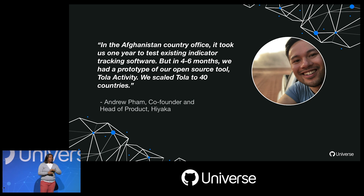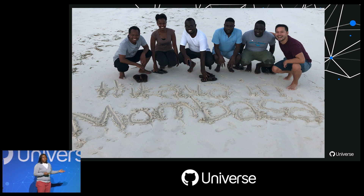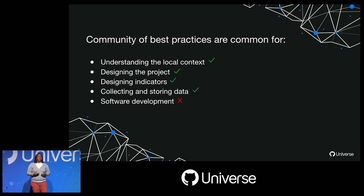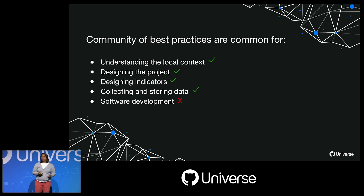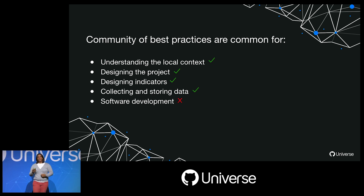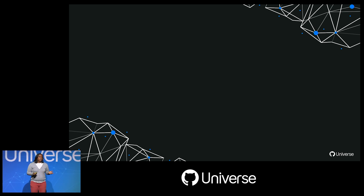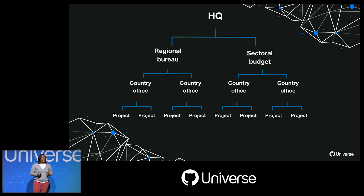Within a few years, they had been able to scale Tola to 40 different countries. One of the things Andrew and I spoke about a lot is that in the social sector, we have communities of best practices for everything — understanding local context, building cultural competencies, designing projects and indicators, collecting and storing data — but somehow we don't necessarily use best practices when it comes to software development. That's understandable given how funding works: money is allocated at HQ in a major city, then trickles down to a regional bureau, through a sectoral budget, to the country office, and finally to the project level.